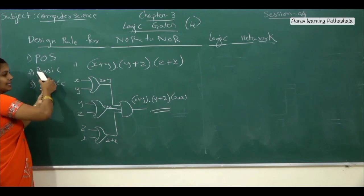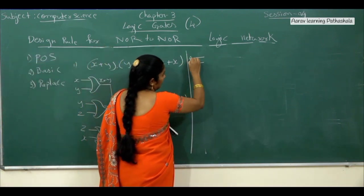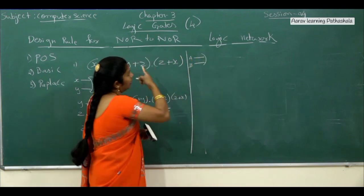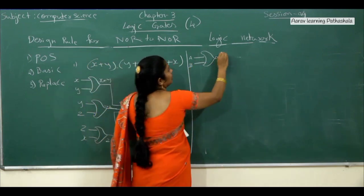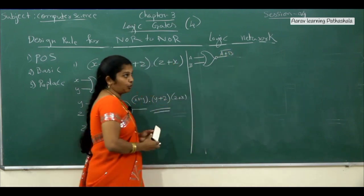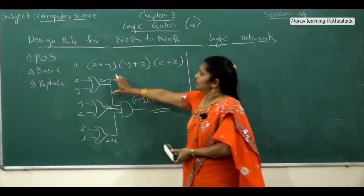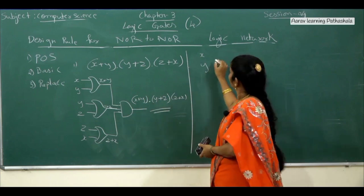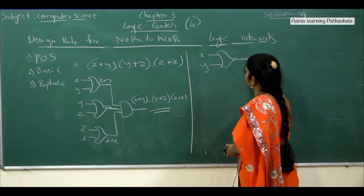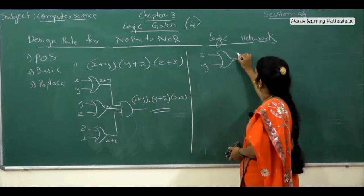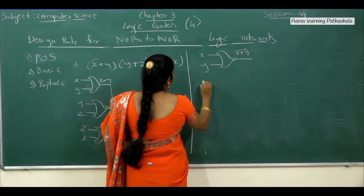The third step: replace all basic gates with NOR symbols. For NOR, the symbol is a reverse C-shape with a circle at the end, and then a line. The output is A plus B whole bar. For the first part, take X and Y — use the NOR symbol: reverse C-shape with circle and line — output is X plus Y whole bar. For the second part, take Y and Z — NOR symbol — output is Y plus Z whole bar.